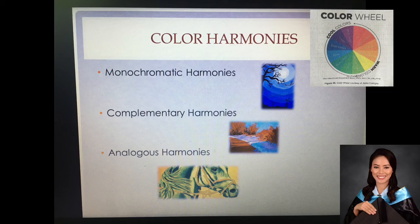Next, we have complementary harmonies. Complementary harmonies involve two colors opposite to each other in the color wheel. Since they are contrary positions, their reaction is most intense. An example picture on the right side uses the color orange and the color blue. If you try to look at the color wheel, they are opposite to each other.